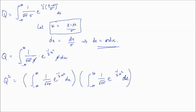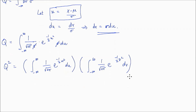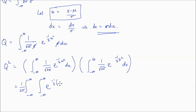If you change the variable of integration in the second copy from u to v, the integral is still the same. With that, we can combine these two integrals into one double integral: from negative infinity to infinity and negative infinity to infinity, with 1 over root 2 pi times 1 over root 2 pi — which when multiplied gives 1 over 2 pi — factored out front, times e to the negative one-half times u squared plus v squared, du dv.